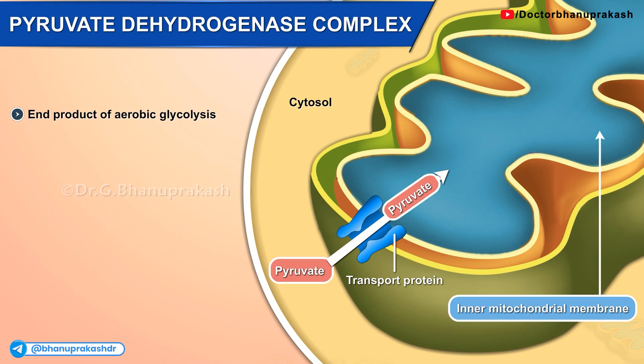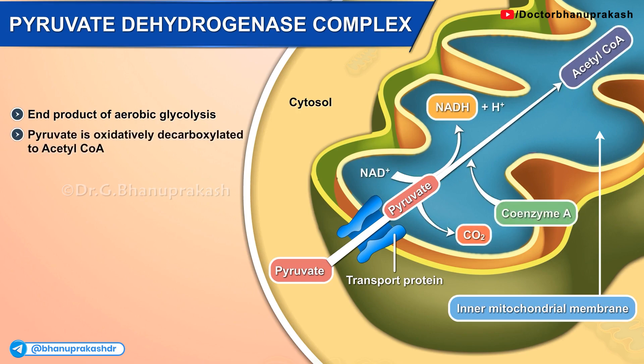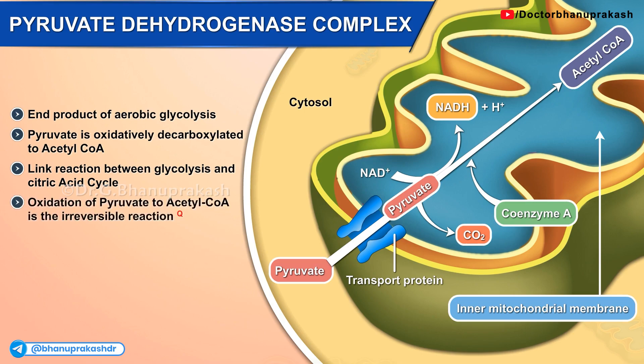In the mitochondrial matrix, pyruvate is oxidatively decarboxylated to acetyl coenzyme A. This is the link reaction between glycolysis and the citric acid cycle. The oxidation of pyruvate to acetyl coenzyme A is an irreversible reaction.